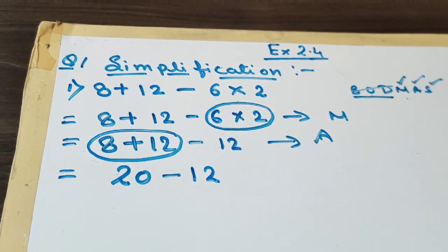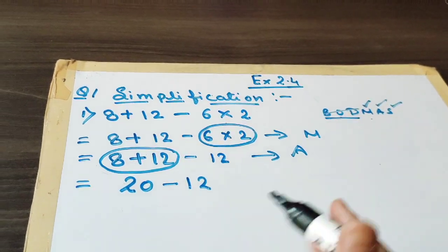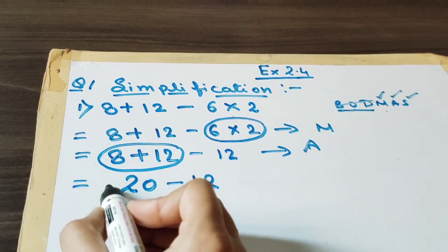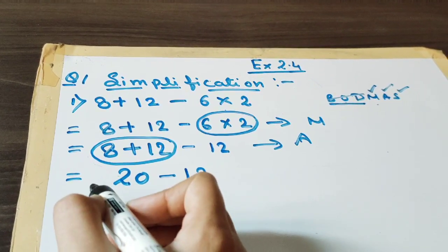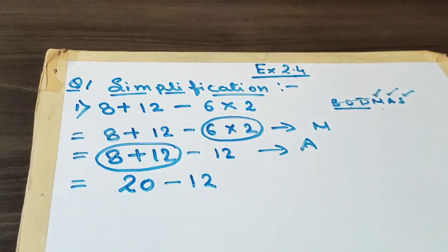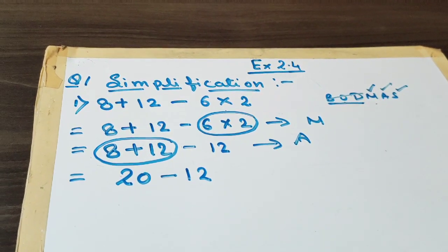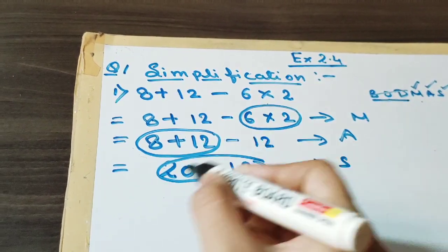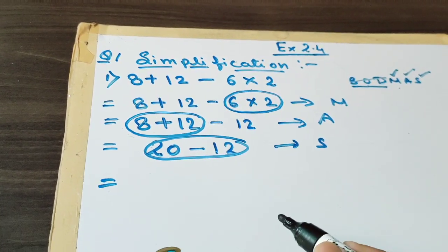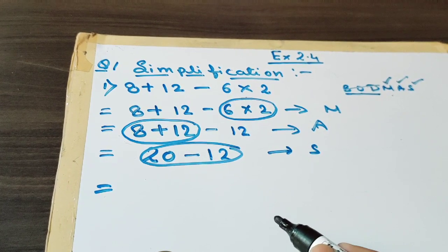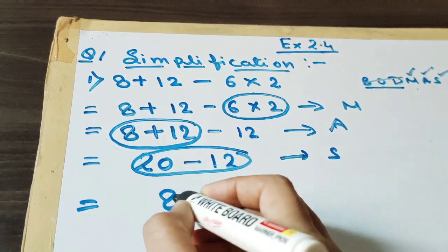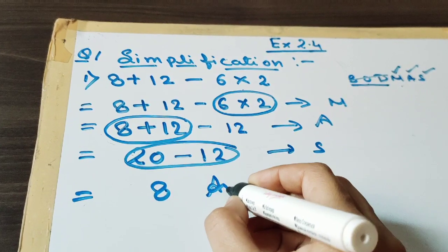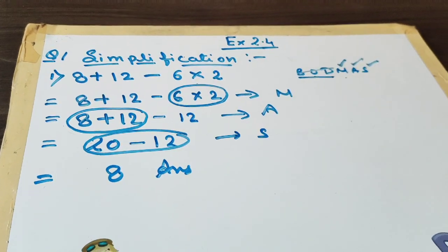Now the last step is subtraction. Only 20 minus 12 is left. Plus and minus becomes minus, so now we subtract: 20 minus 12 is 8. That is the answer for the first question.